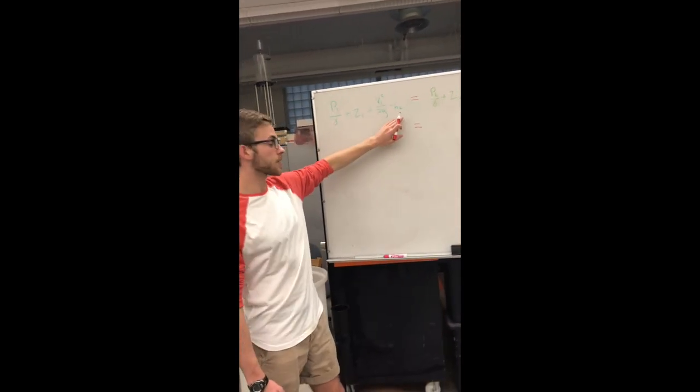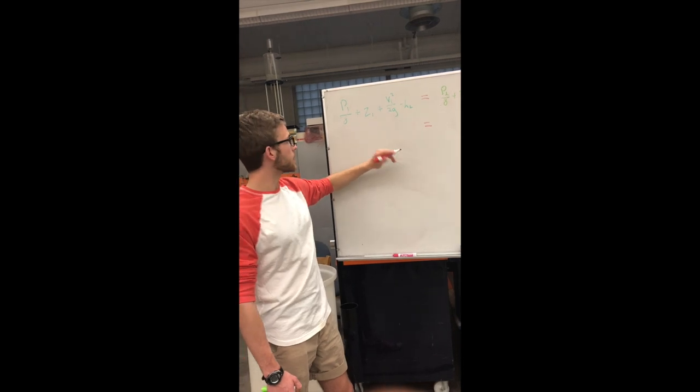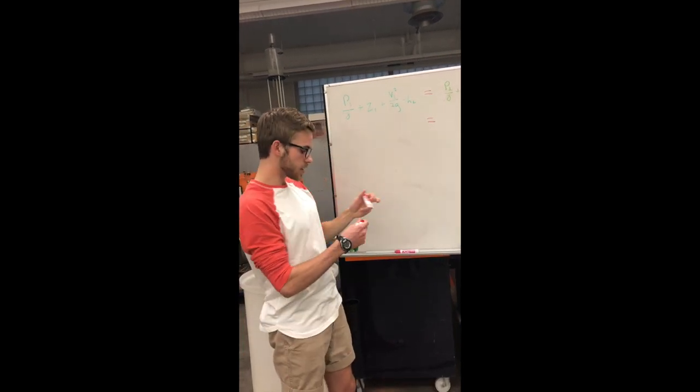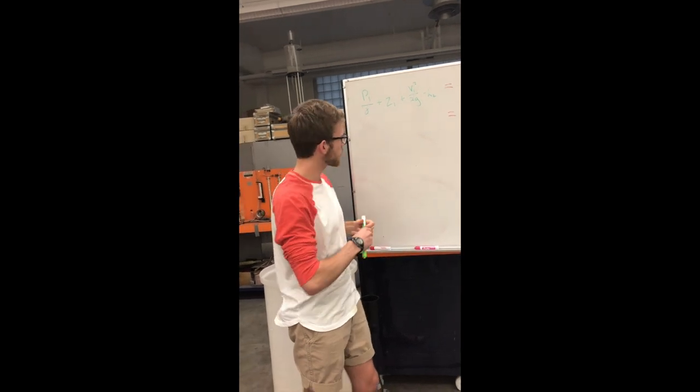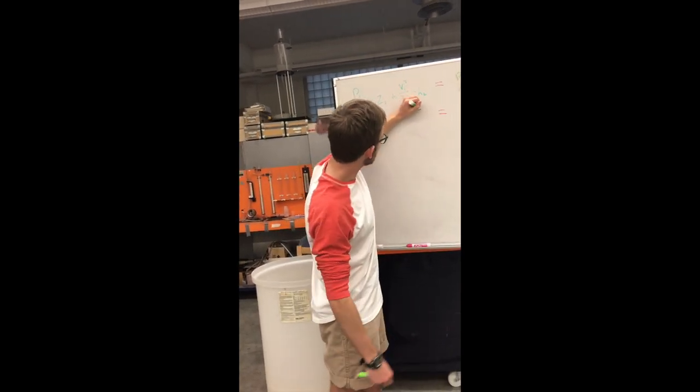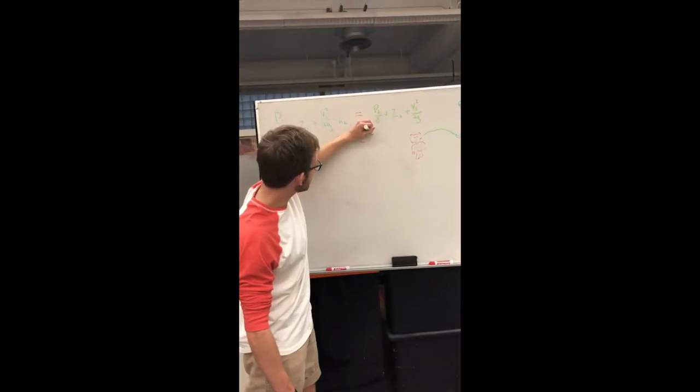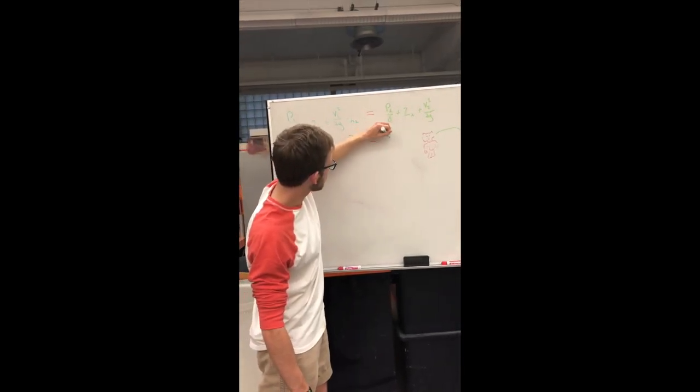Now for right now we're going to ignore the head loss and come back to that later. So we can treat it as z1 equals v2 squared all over 2g.